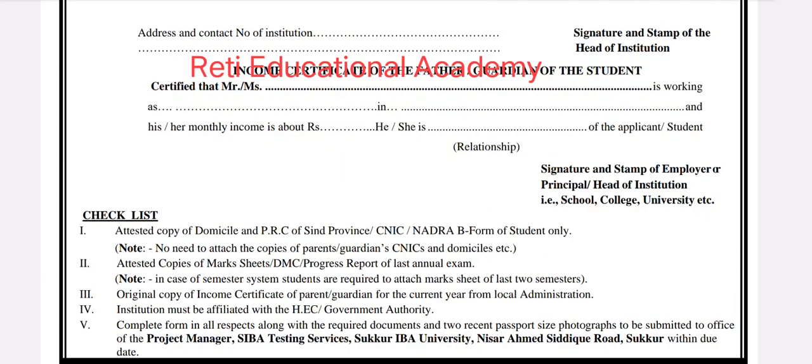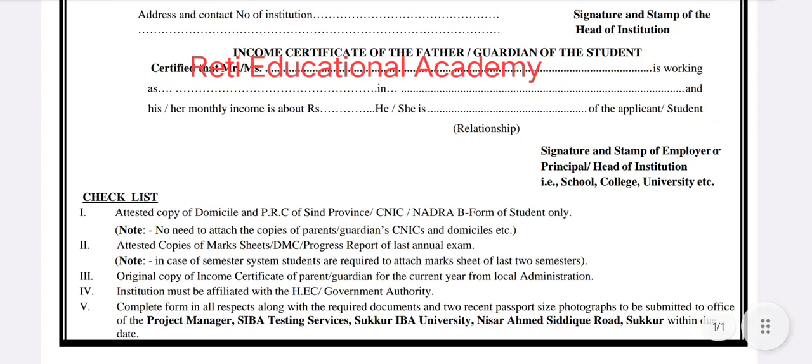Checklist number 1: attested copies of domicile and PRC of Sindh province, CNIC, and Nazra Bay Form — you must include these three things. Domicile and PRC (Permanent Residence Certificate) are required for admission in institutions. Note: there is no need to attach copies of the parent's or guardian's CNIC or domicile.